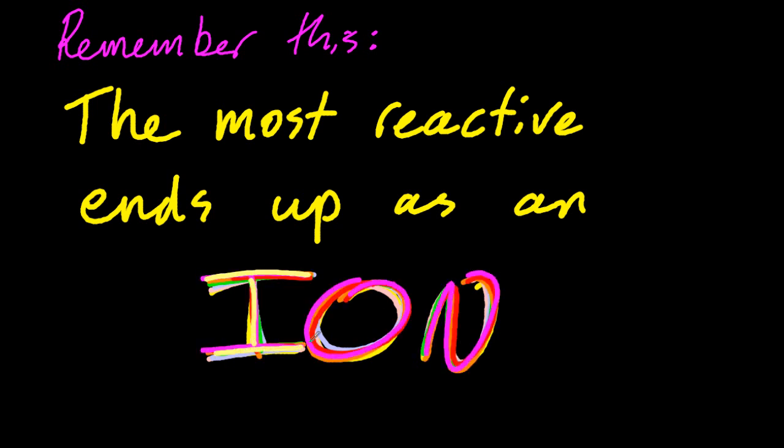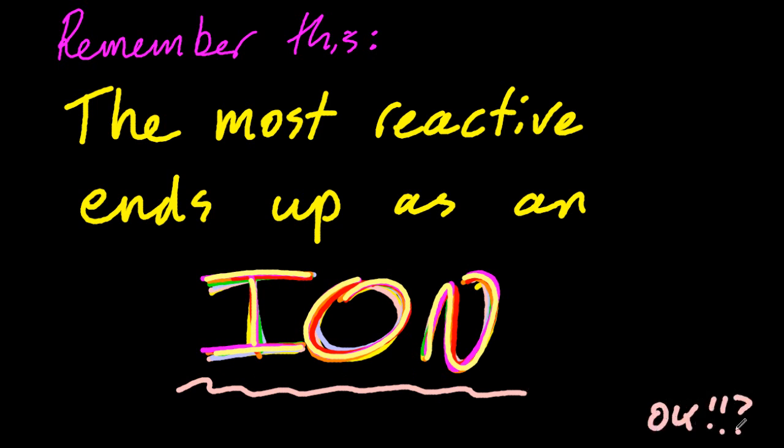Okay, so what does that mean? Let's see if we can unpack it a little bit. Well, metals and non-metals, when they react, become ions. So the most reactive is going to become an ion.